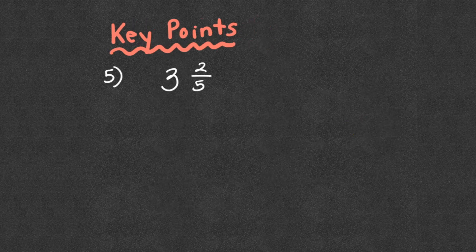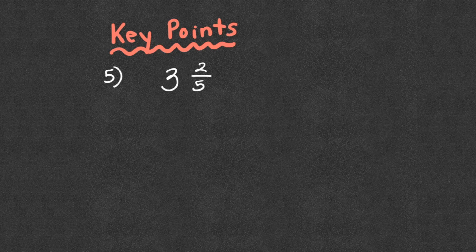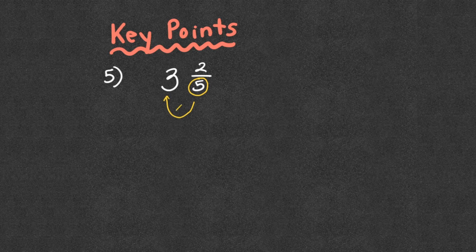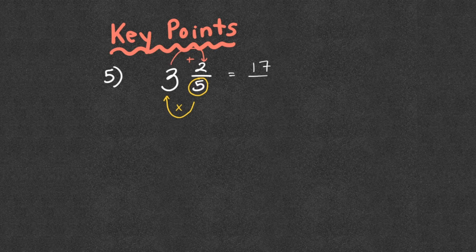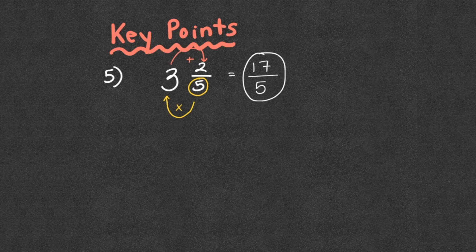If we looked at another one, also in fifths, what this means is that we have 5 pieces in each whole and 3 wholes. So we have 15 pieces. We then have 2 pieces left over that we add. So 15 plus 2 is going to give us 17 pieces. In each of the wholes, there's still 5 pieces. So it's 17 fifths.